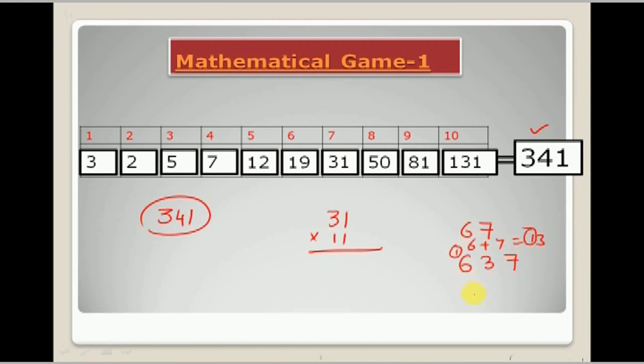And this 1 will be carried to the next digit. This will become 7. So the number will be 737. In this way you will be able to multiply quickly with 11.